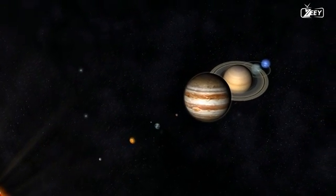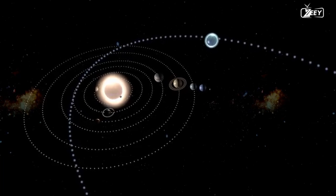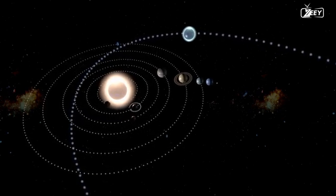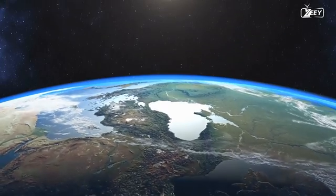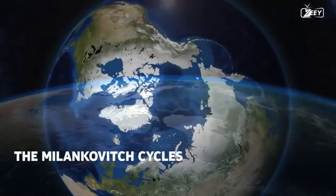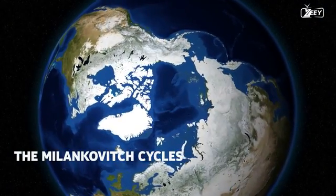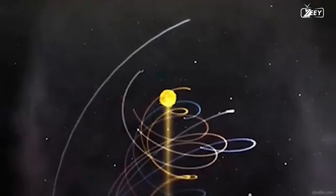This cosmic dance is known as the perturbation of the outer planets. Subtle changes in Earth's orbit induced by the outer planets can now have a significant impact on our temperature and ecosystem. The Milankovitch cycles are what we're talking about. These cycles are similar to Earth's natural rhythm.